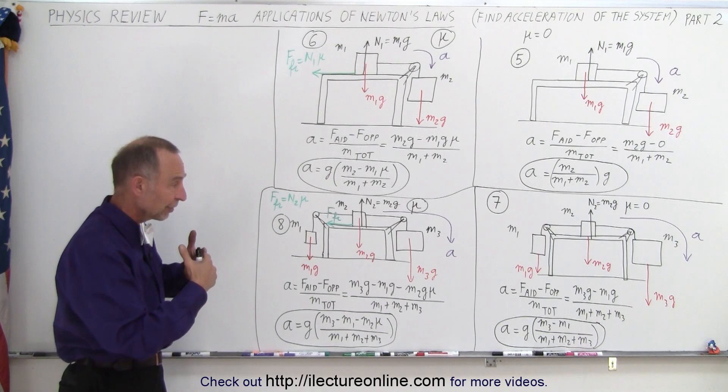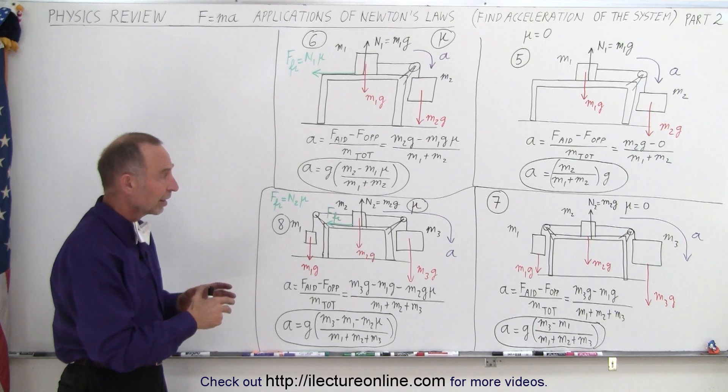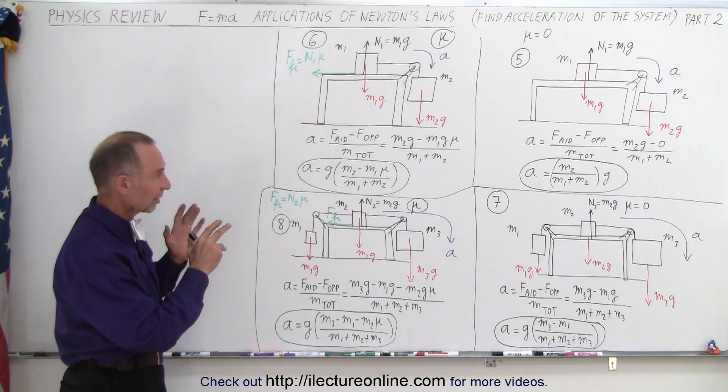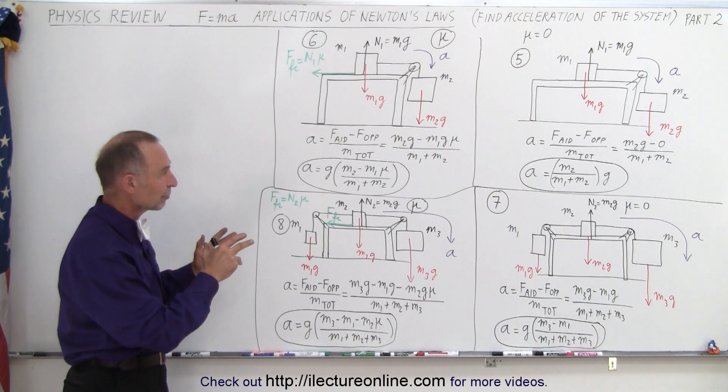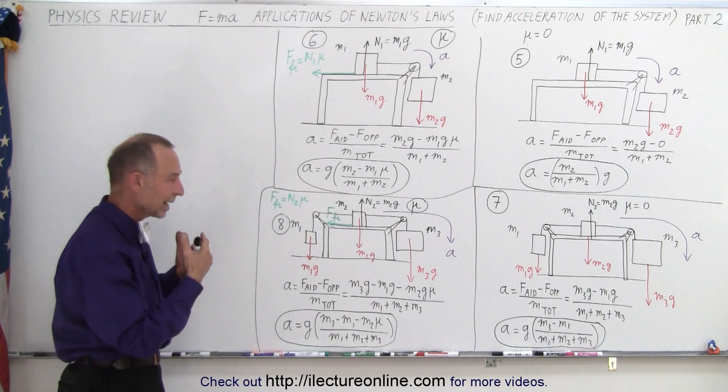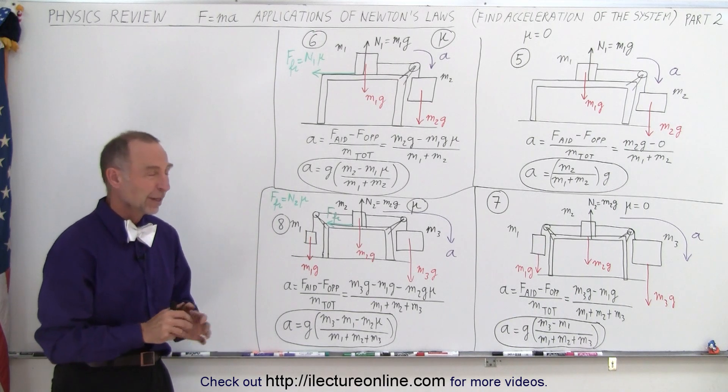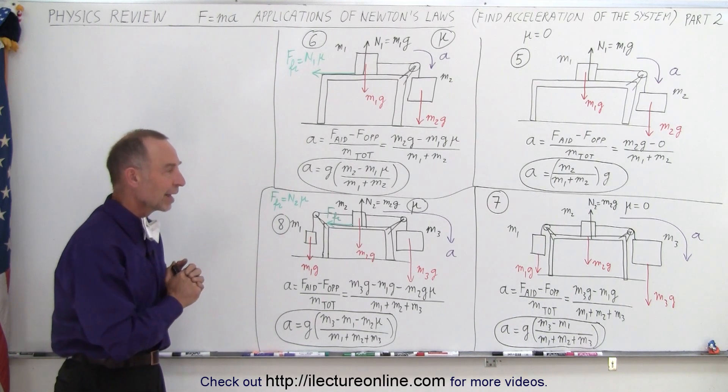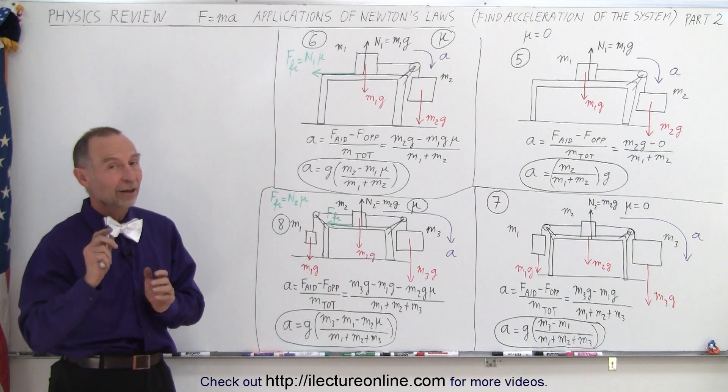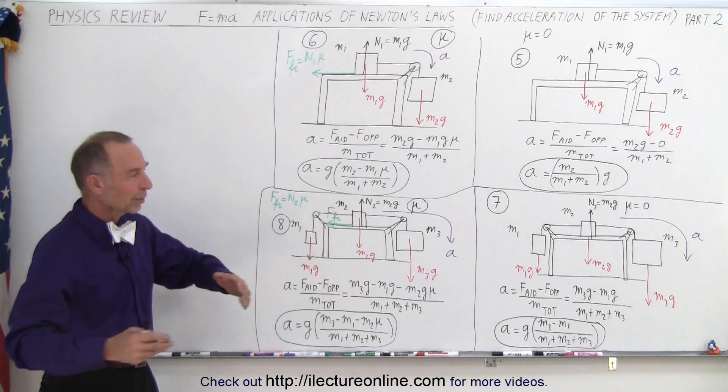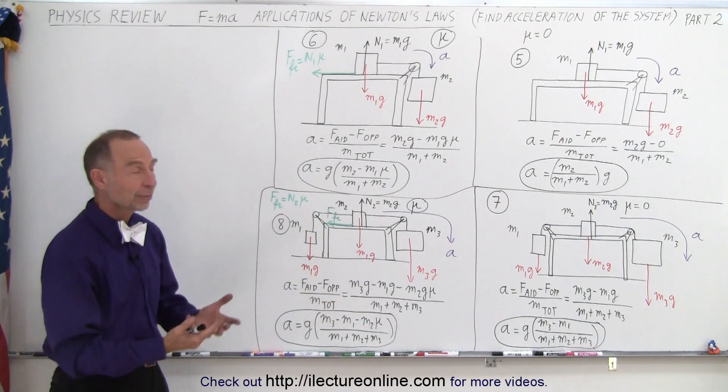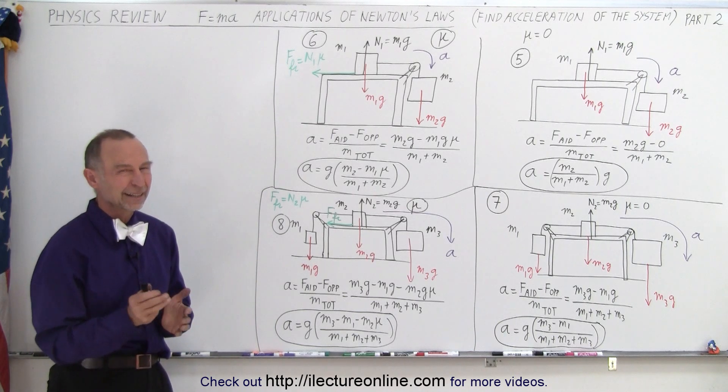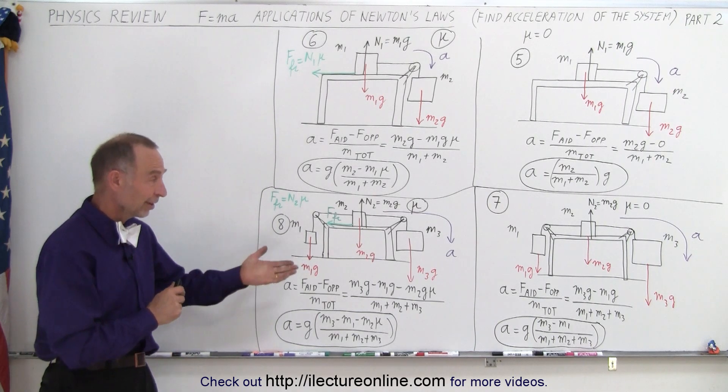Notice that it's a very straightforward method, it's very simplistic, you just have to identify the aiding forces, the opposing forces, divide by the total mass of the system, and you have the acceleration of the system. You don't need to use any free body diagrams. However, that said, we will show you a summary example of how to use a free body diagram to solve similar types of problems. That will come later. And this is how it's done.